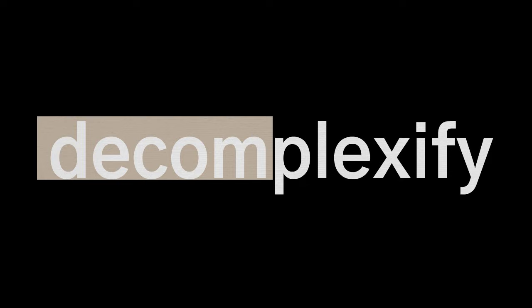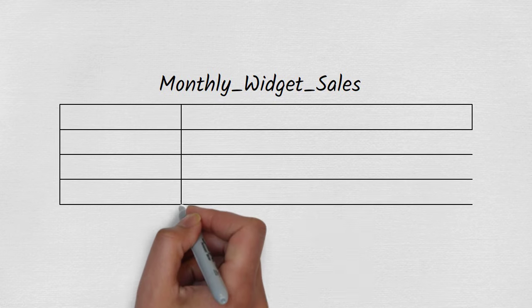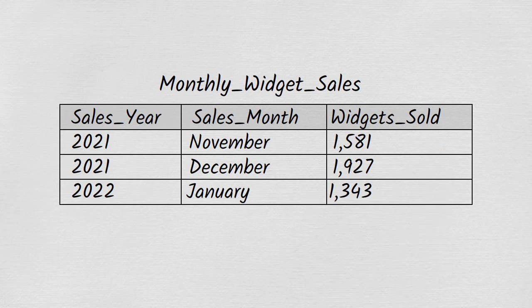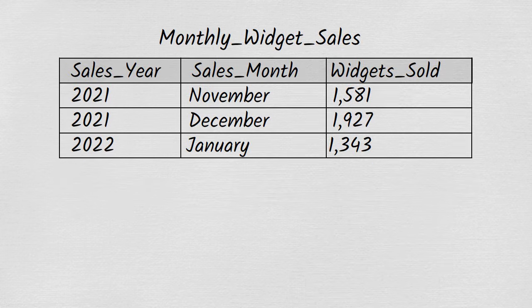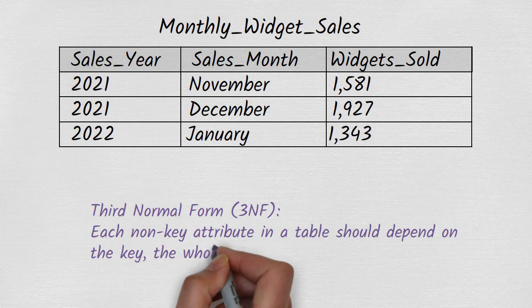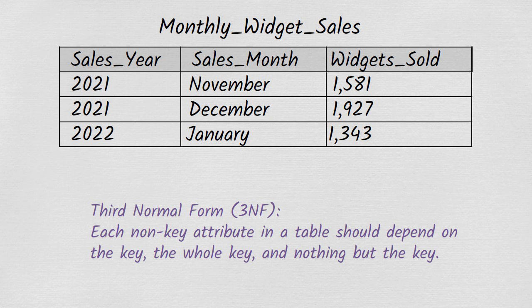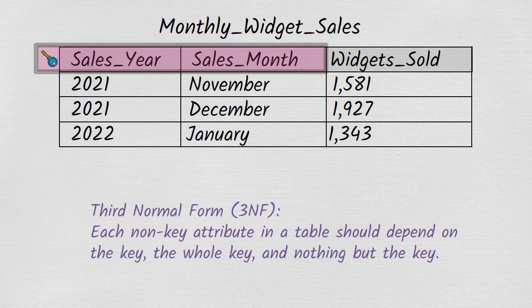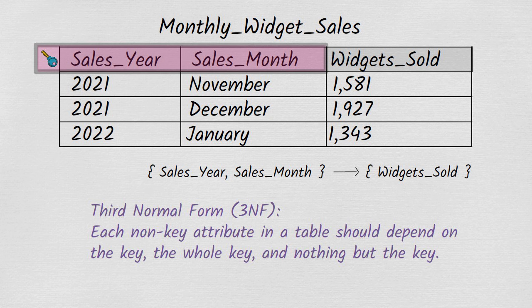Let's start by reviewing third normal form. Recall that third normal form is defined informally like this: each non-key attribute in a table should depend on the key, the whole key, and nothing but the key. Is the monthly widget sales table in third normal form? Its primary key is the combination of sales year and sales month, meaning the only non-key attribute is WIDGETSOLD. WIDGETSOLD depends on the entire key — the combination of sales year and sales month — and doesn't depend on anything else. Therefore, the monthly widget sales table is in third normal form.